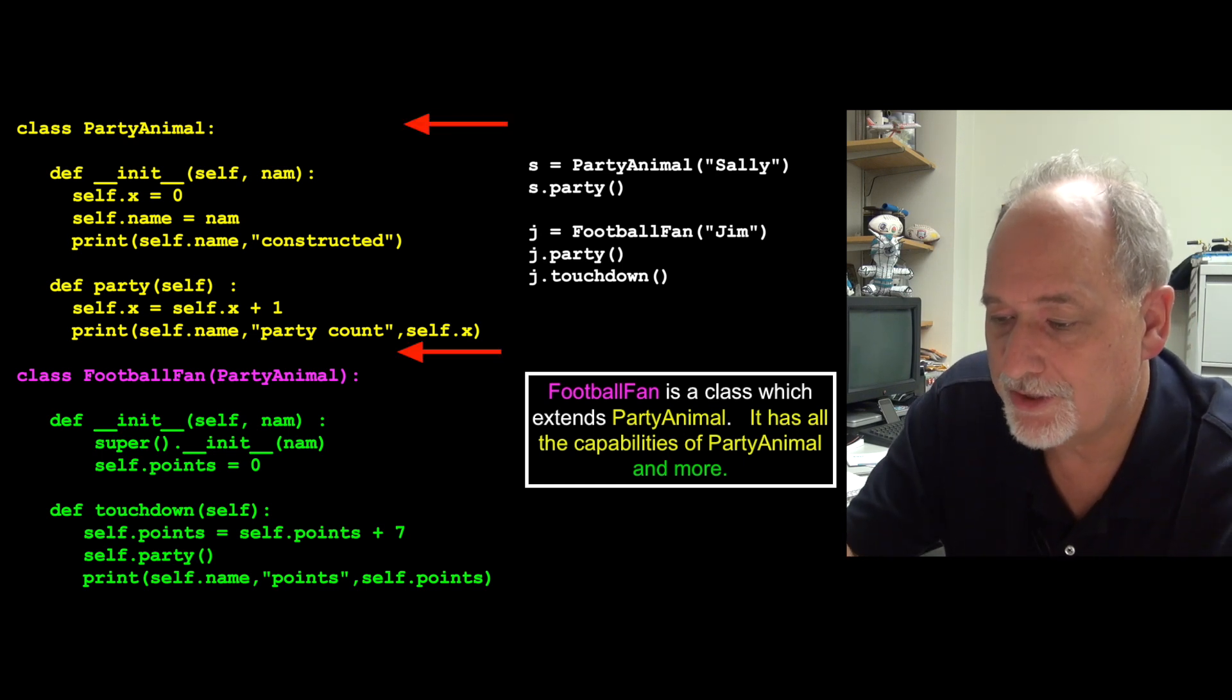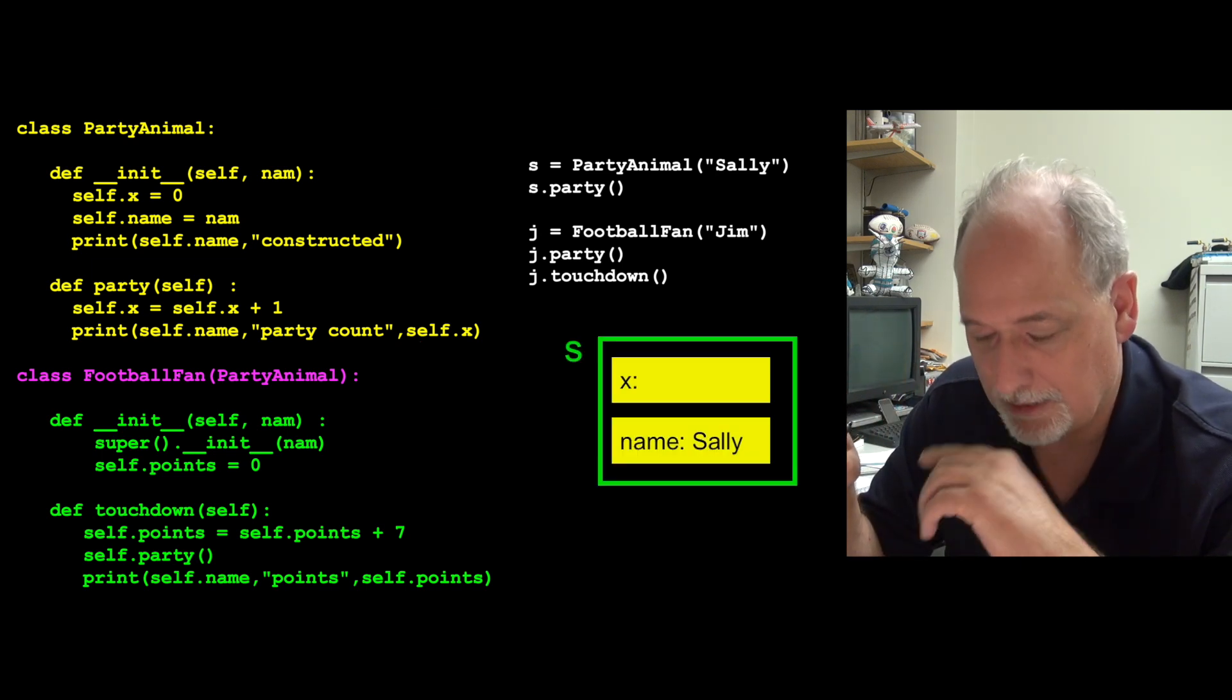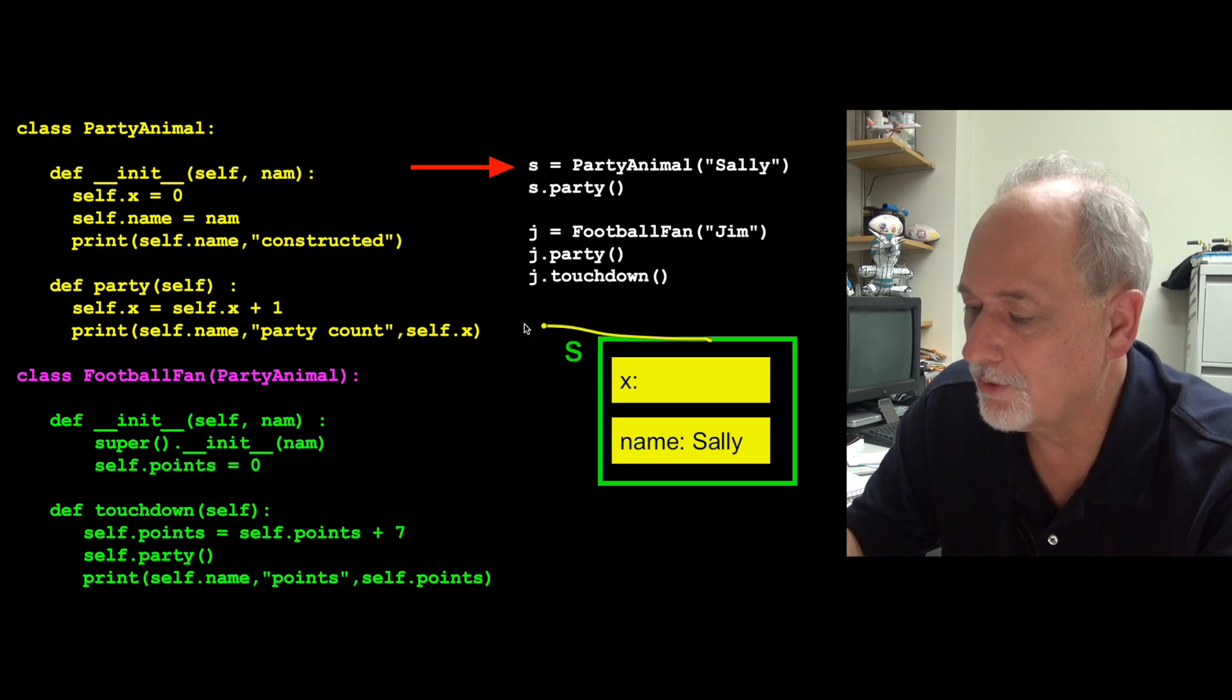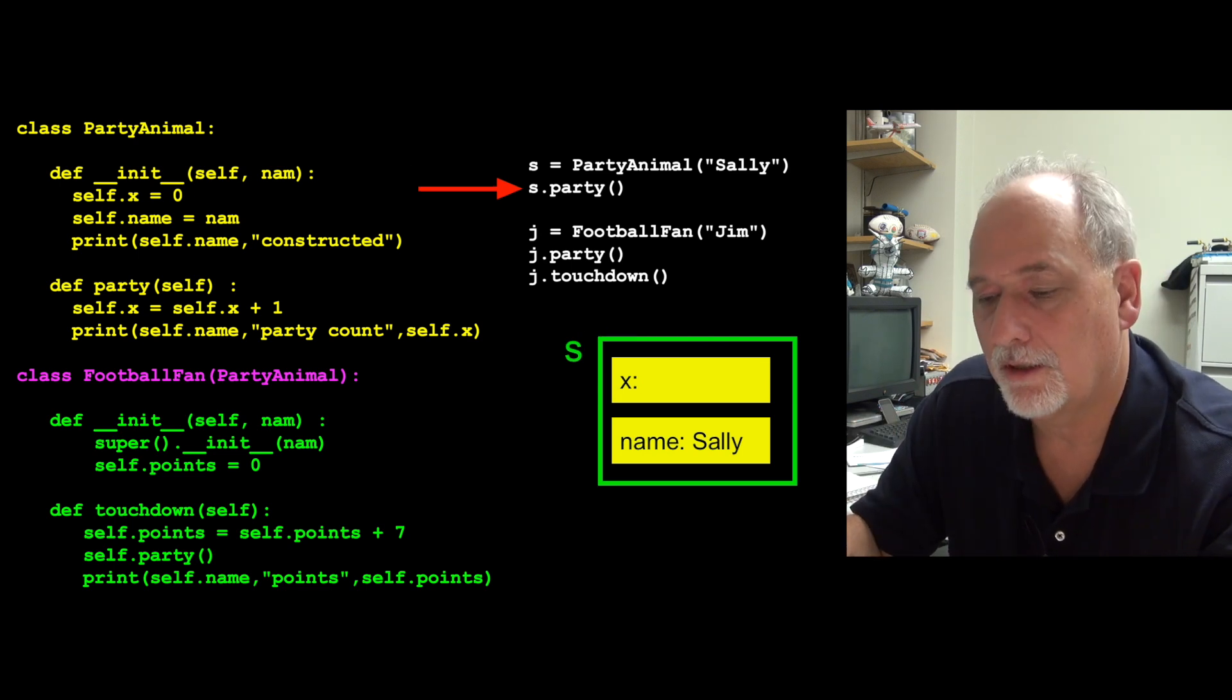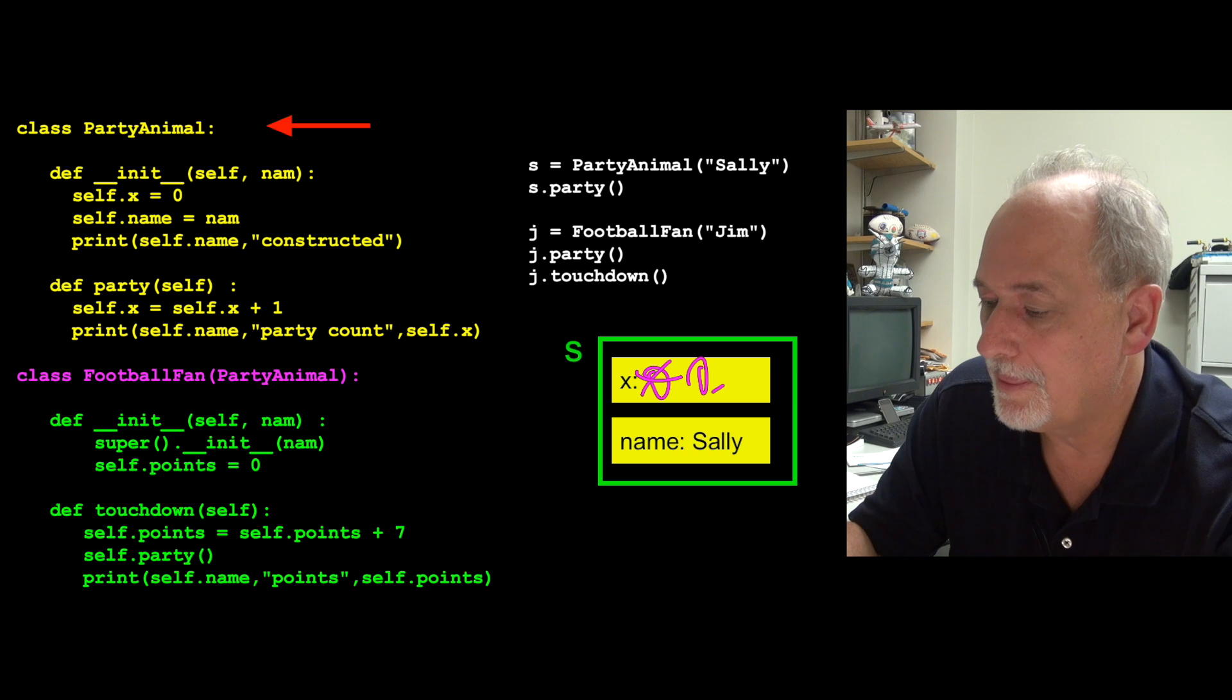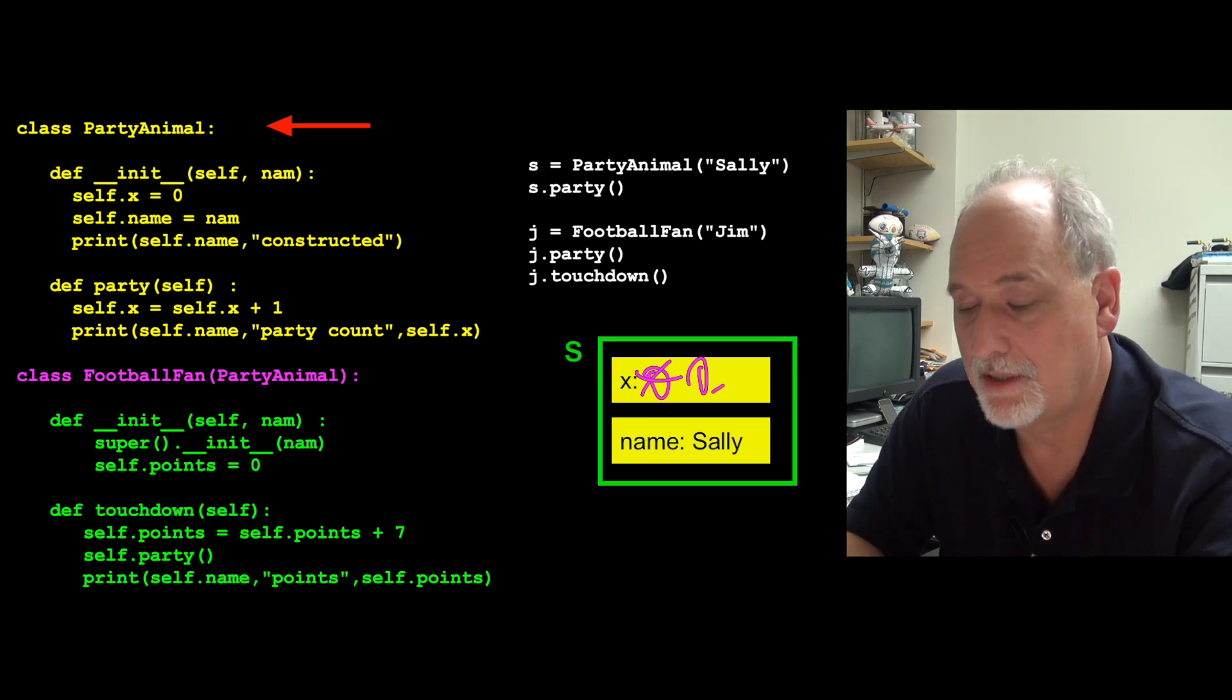PartyAnimal is just this stuff, right? And so we still have two classes. We don't just have one. We didn't erase the PartyAnimal class. And so we take a look at the code that we can run here. We can say, let's make a PartyAnimal, Sally. And so that constructs an object like this, and then stores that in s. And with an x starting out at zero. And then we call s.party, starts out at zero. And then we call the party method, and that changes it to one. And so this bit of code, it's as if this part doesn't matter at all, because it is a party animal. It's not a FootballFan.